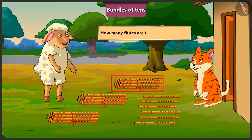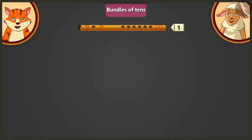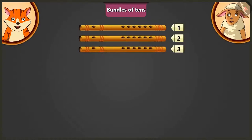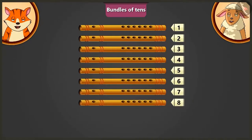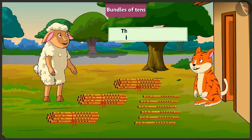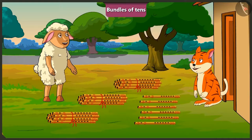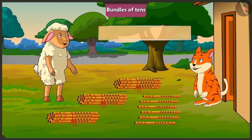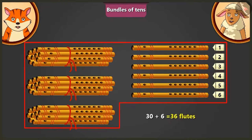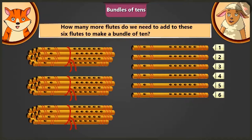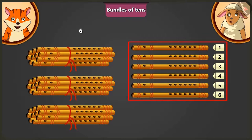Lily, how many flutes are there in one bundle? One, two, three, four, five, six, seven, eight, nine, ten. One bundle here has ten flutes. How many bundles of flutes are there in total? One, two, three. There are total three bundles of flutes. Lily, now tell me, how many flutes are there in all? There are thirty and six — total thirty-six flutes.